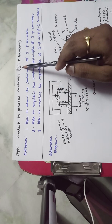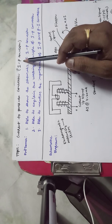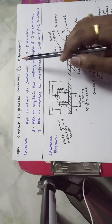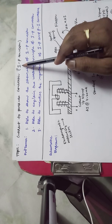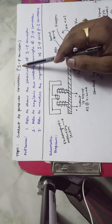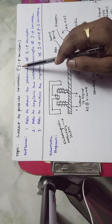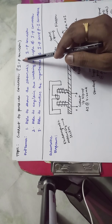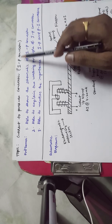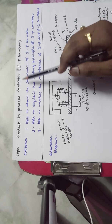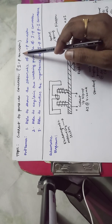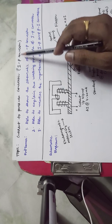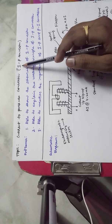For the I2P converter, the input signal will be 4 to 20 milliamperes and the output signal will be 3 to 15 PSI. Students should focus on this: for the I2P converter, input is 4 to 20 milliamperes and output is 3 to 15 PSI. For a P2I converter (pressure to current), it is the reverse: 3 to 15 PSI is converted to 4 to 20 milliamperes.